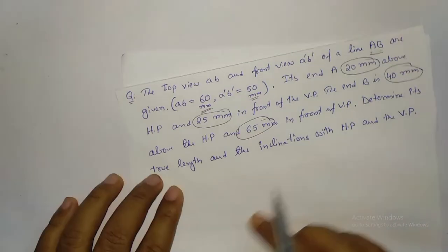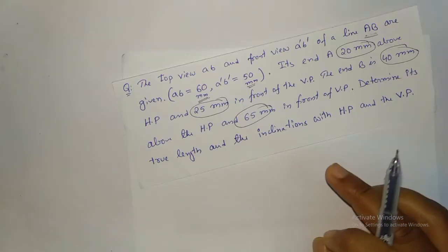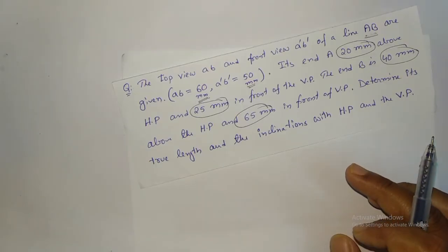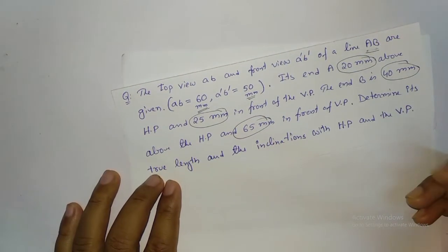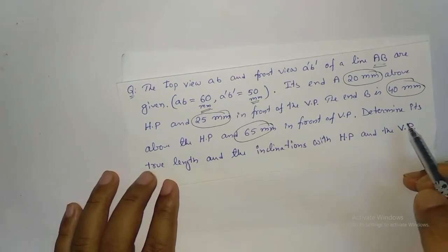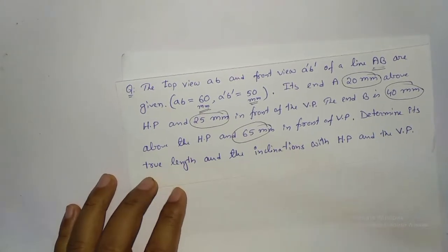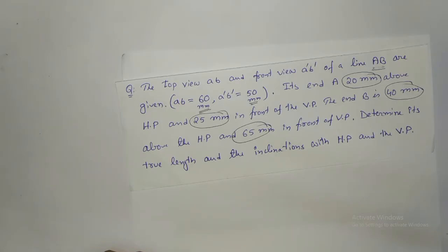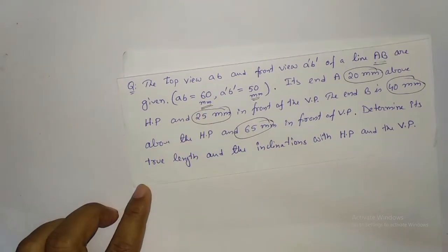Based on this, I am going to draw AB, A-dash B-dash, and AB — two projections. Length is given, and after that I am going to determine the true length and the inclination with HP and VP. First I am going to draw the reference line and the projections AB and A-dash B-dash.